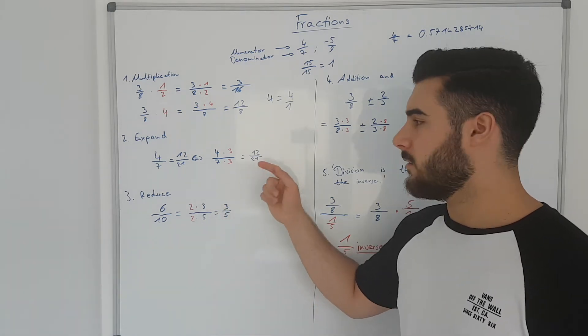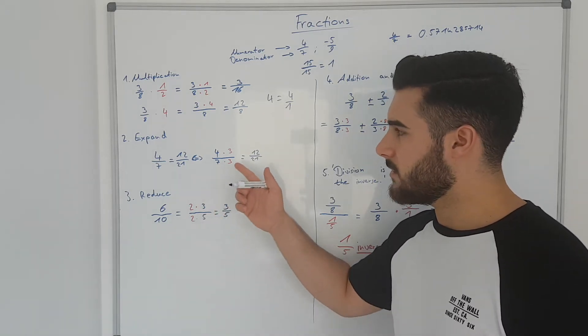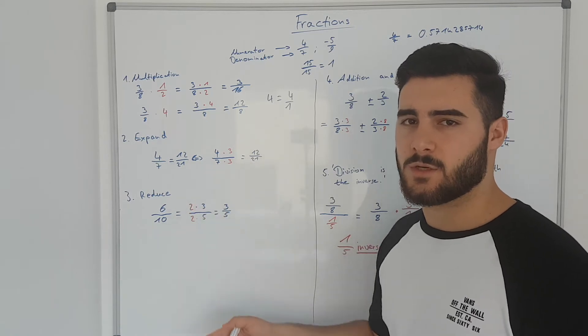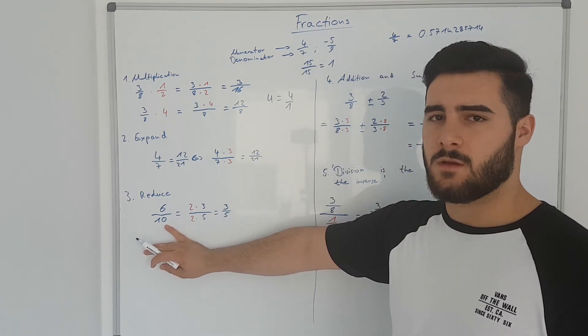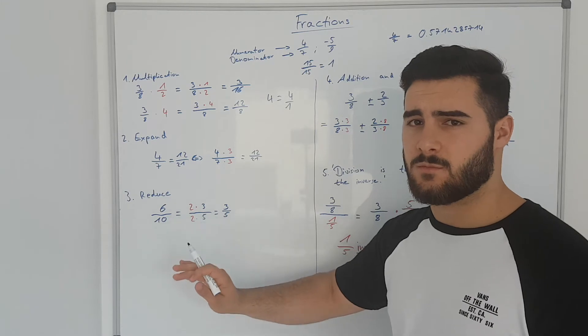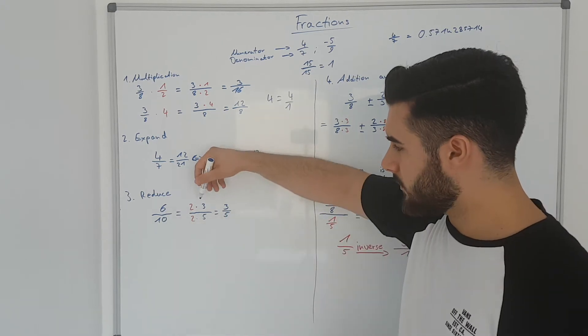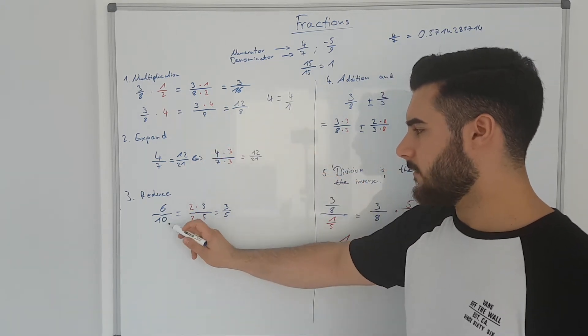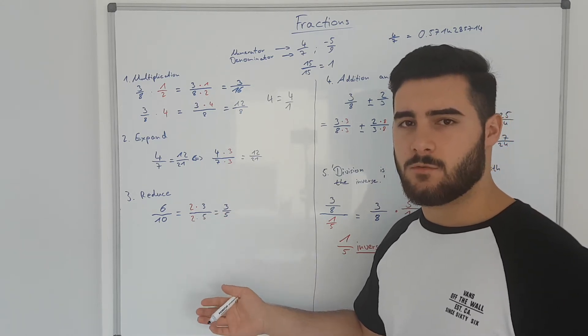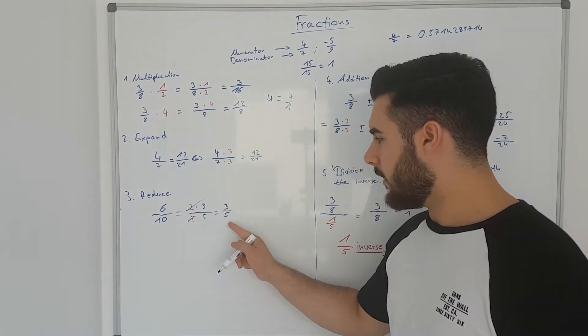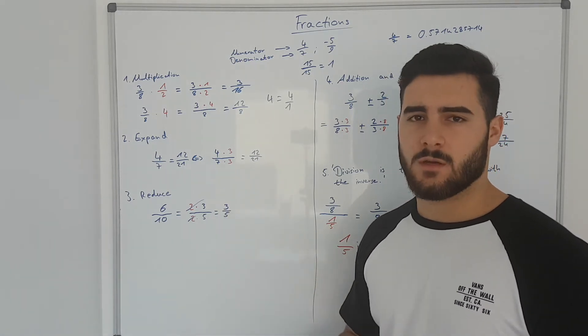So other than expanding, you can also reduce fractions. What does that mean? That means basically the same thing as you do with the expansion of a fraction, just the other way around. So that means, imagine you have 6 over 10. You see that you can divide both numbers with the same number. So that means you can divide 6 by 2 and you can divide 10 by 2. That means if you write that down, 6 over 10 is equal to 2 times 3 over 2 times 5. Why does it mean reduce? Because we can reduce the 2's and are only left with 3 over 5. And this is basically how you expand or reduce fractions.